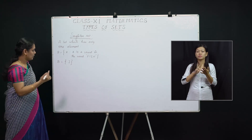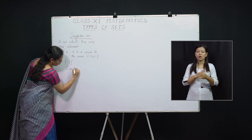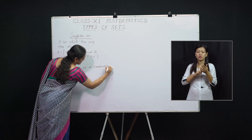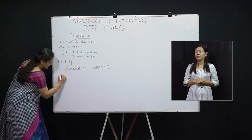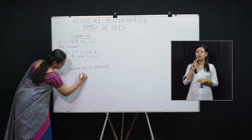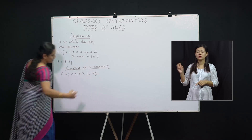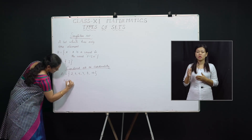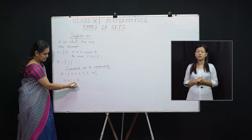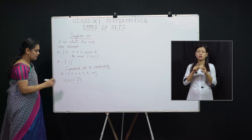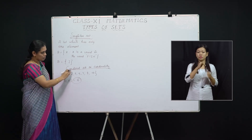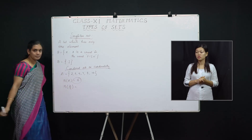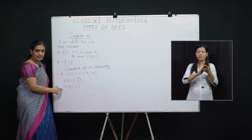Before we move on to the next type, we will learn Cardinal Number or Cardinality of a set. Let me take a set {2, 3, 5, 7, 8, 10}. There are 6 elements, so we write n(A) = 6. The number of elements present in a set is called the Cardinal Number or Cardinality of the set. Then what is n(∅)? n(∅) = 0, because it does not have any element.